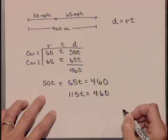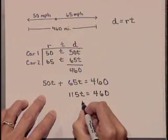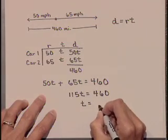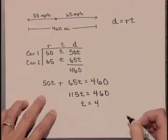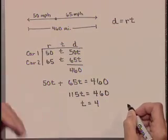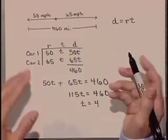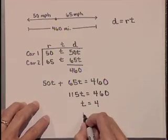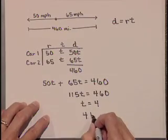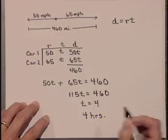As a last step, divide both sides by 115 to yield T is equal to 4. The amount of time that it's going to take for these cars to get 460 miles apart is 4, and don't forget your units on that, hours.